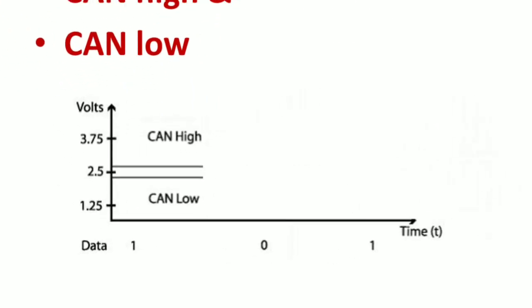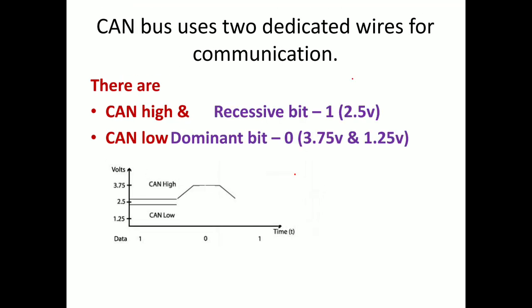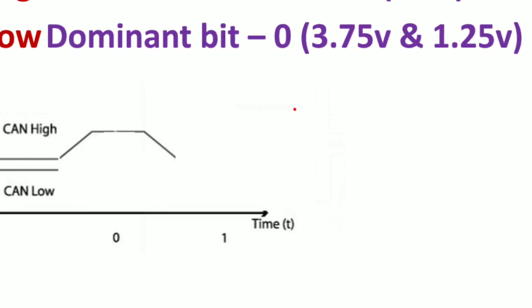The starting bit of CAN is one - a recessive bit. CAN high reaches 3.75V, which is a recessive bit starting from 2.5V. Once it reaches 3.75V it becomes a dominant bit, which equals zero.